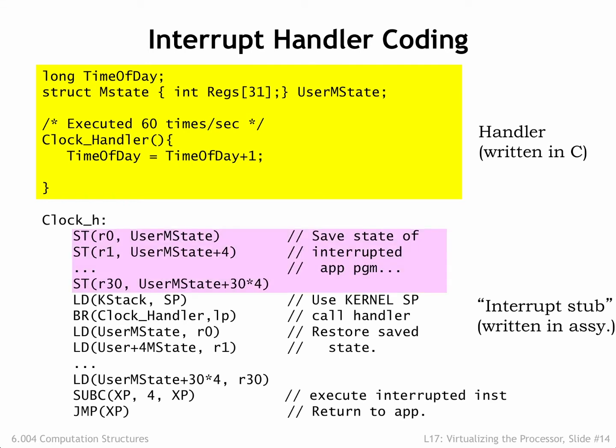The code first saves the values of all the CPU registers into the userMState data structure. Note that we don't save the value of R31 since its value is always 0. After setting up the kernel mode stack, the assembly language stub calls the C procedure to do the hard work. When the procedure returns, the CPU registers are reloaded from the saved process state and the XP register value decremented by 4 so that it will point to the interrupted instruction. Then a jump XP resumes user mode execution.